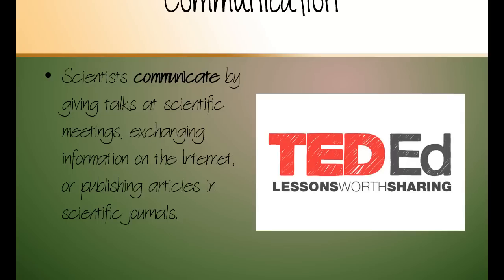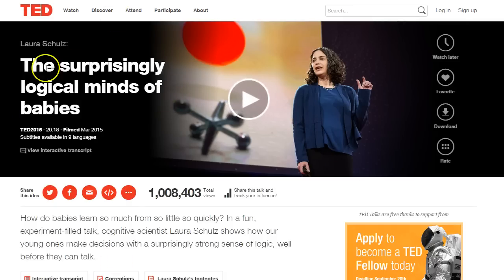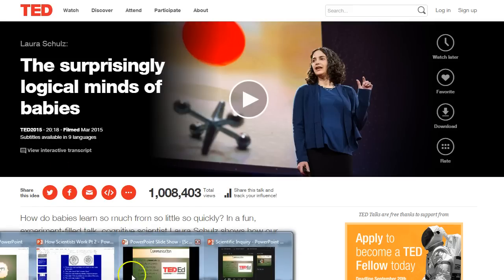Alright, communicate. Scientists communicate by giving talks at scientific meetings. They exchange information on the internet. They publish articles in journals. So if we, you know, when you go to TED-Ed or TED or anything, and we were going to watch this video of this woman talking about the surprising logical minds of babies, she is a cognitive scientist. She's sharing her information in this video. It's 20 minutes long. People that speak nine different languages are able to watch this video. So this is a very powerful way that scientists are able to share their information.